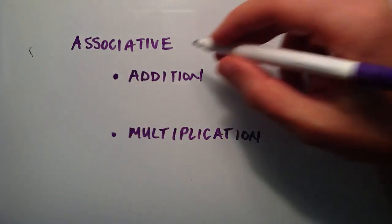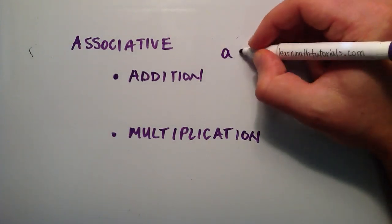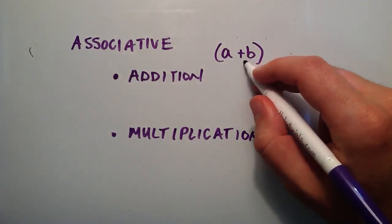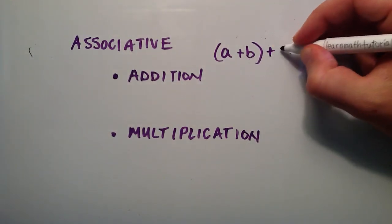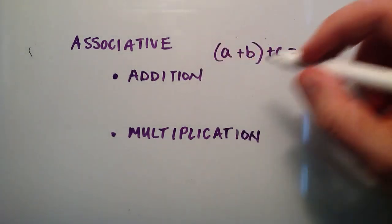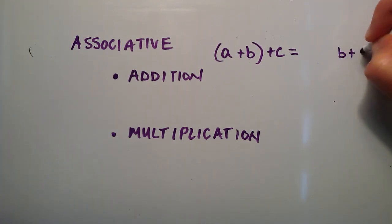The associative property of addition means we can have some number A, add some number B to it, and when we get that result, add it to a third number C. The associative property of addition tells us that's the same as taking the number B, adding it to the C first,